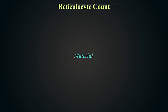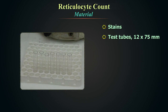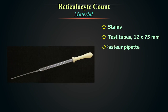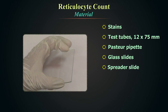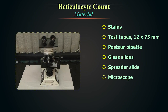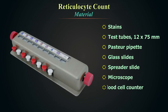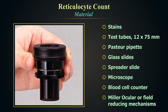The materials required for reticulocyte count include: stains, 75 x 12 mm test tubes, Pasteur pipettes, glass slides, spreader slide, microscope, blood cell counter, and Miller's ocular or field reducing mechanisms.